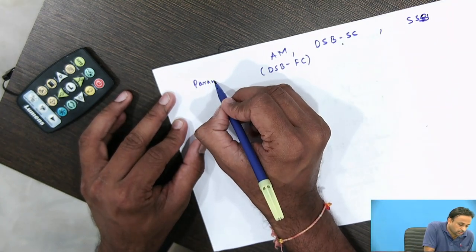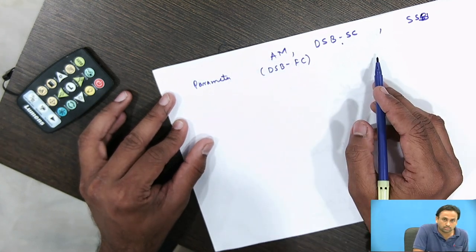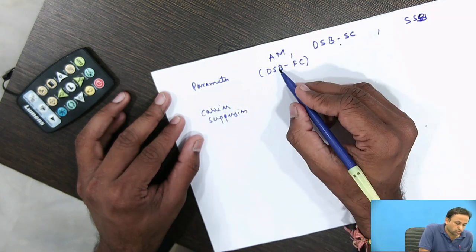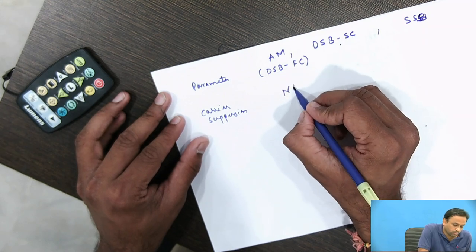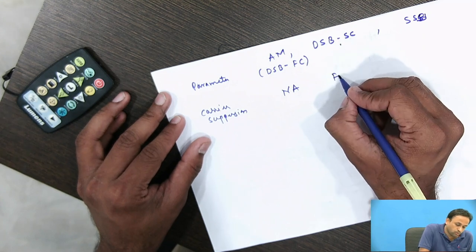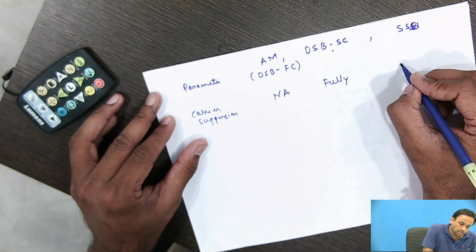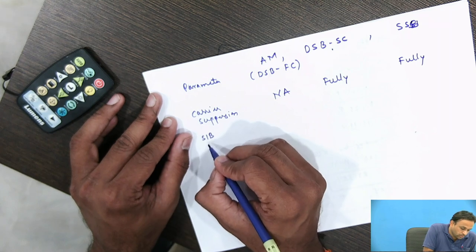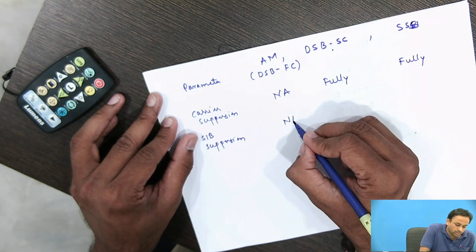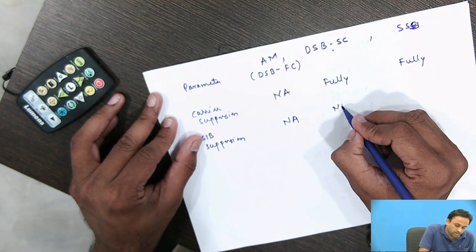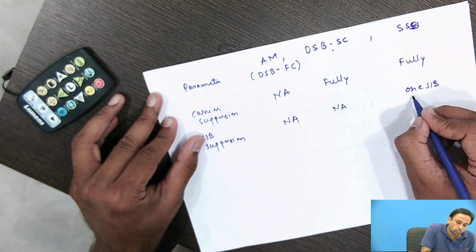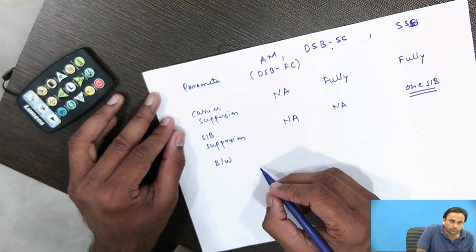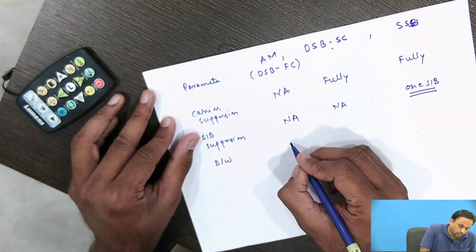We compare these three signal types on several parameters. First, carrier suppression: AM requires no carrier suppression. DSB-SC fully suppresses the carrier. SSB also fully suppresses the carrier. Second, sideband suppression: not applicable to AM, not applicable to DSB-SC, but one sideband is suppressed in SSB.